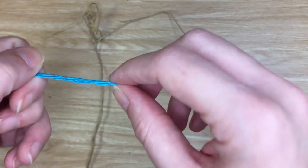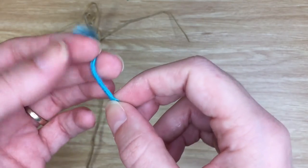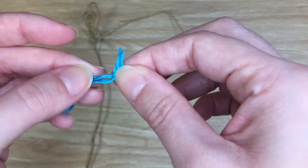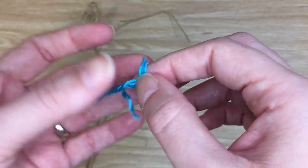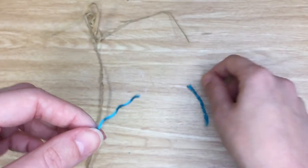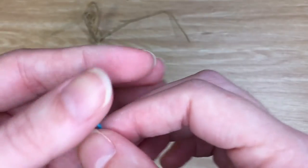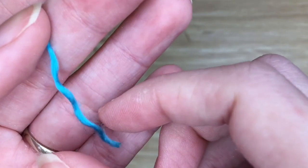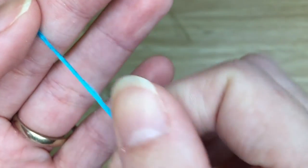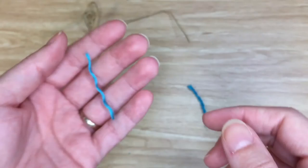If we undo this yarn and pull it apart, you can see that it's twisted. Then if you look closer at the fibers, they're twisted the other way and you can see this with the string.